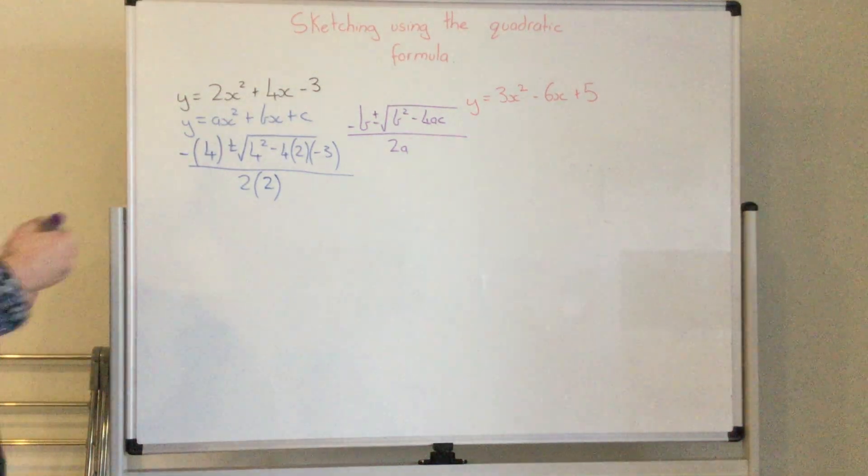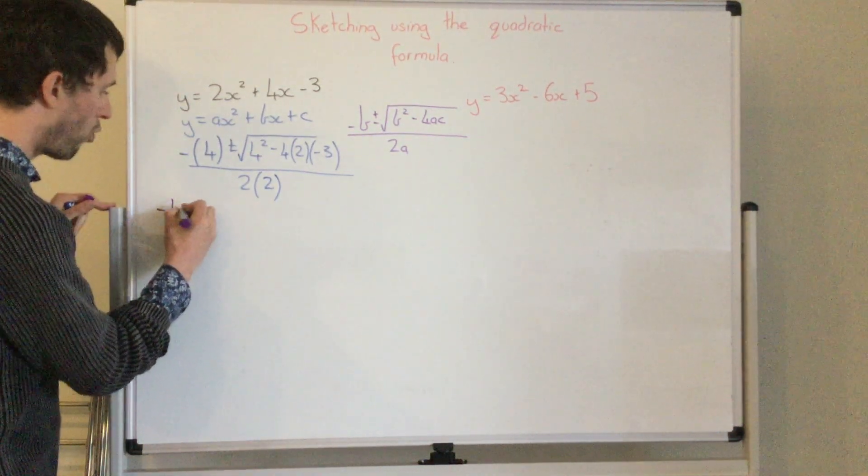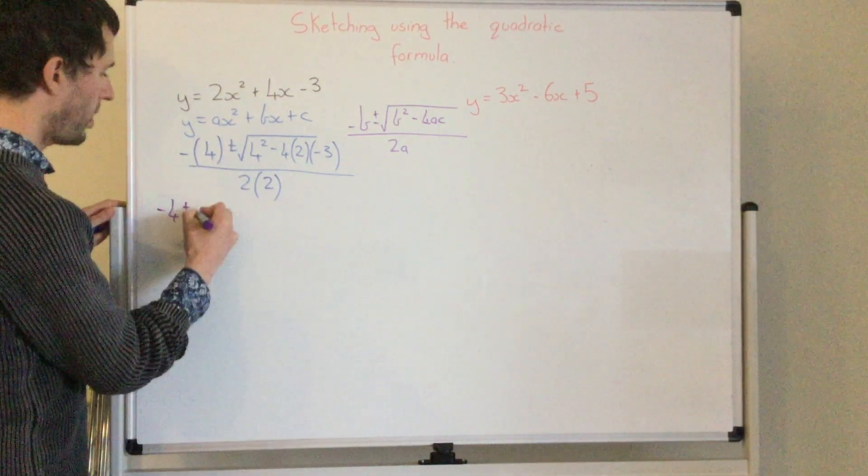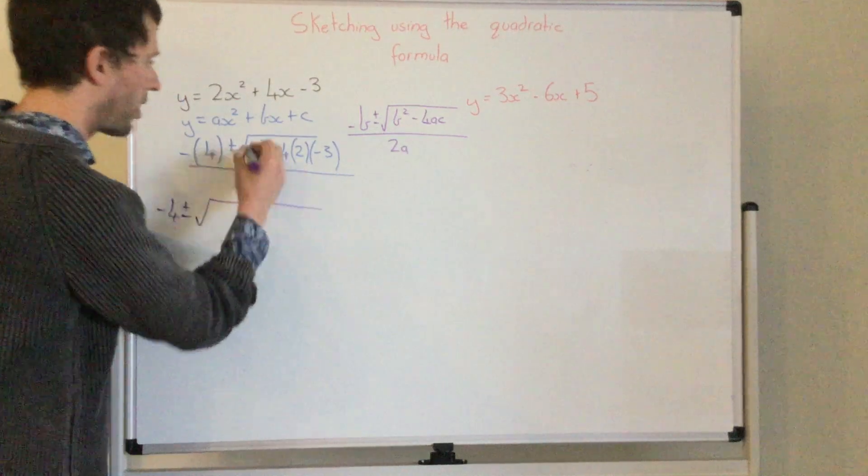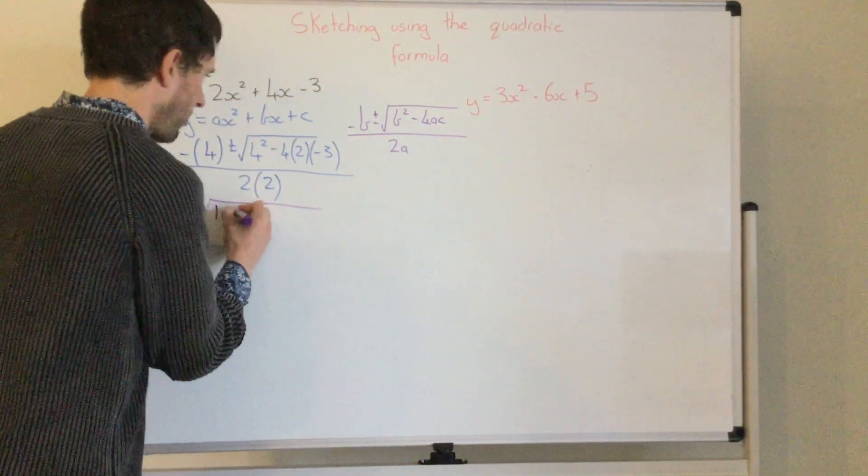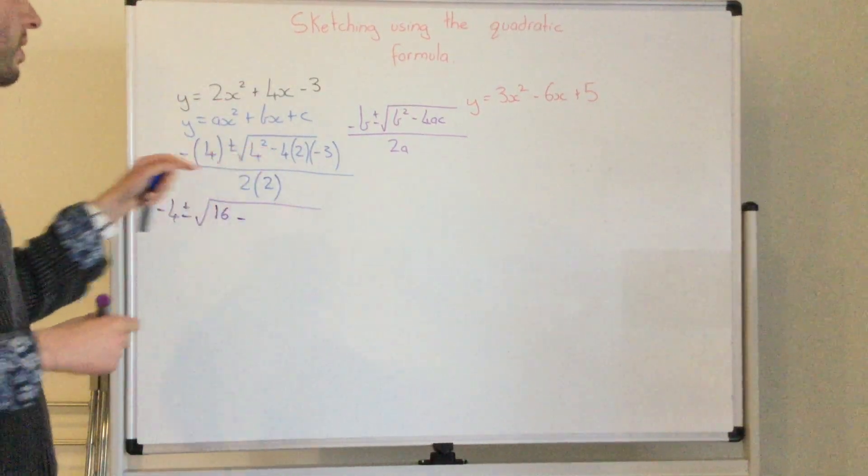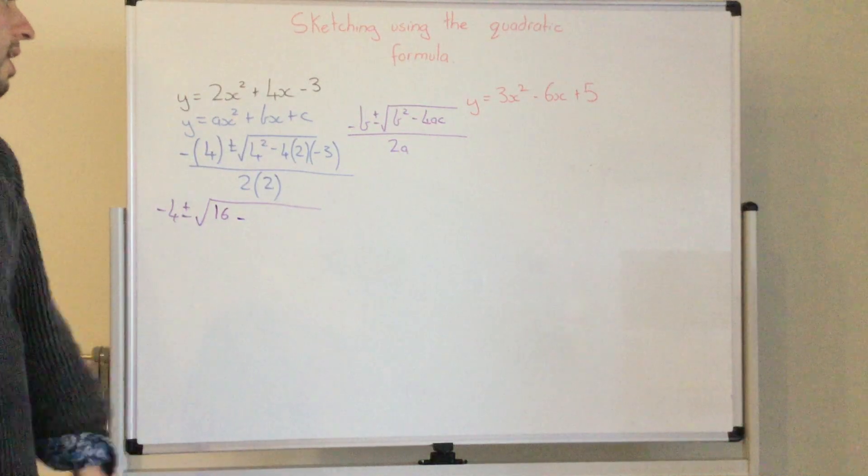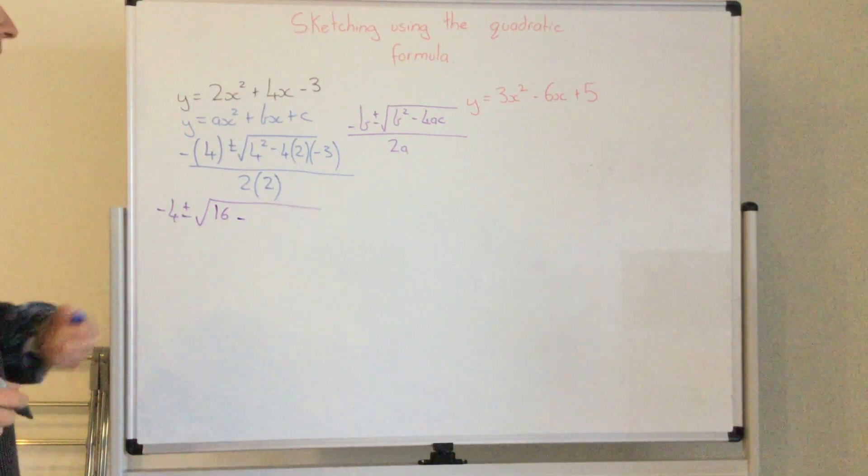Now I'm going to simplify. Negative 4 plus or minus the square root, 4 squared is 4 times 4 equals 16. Minus, now negative 4 times 2 is 8. So it's negative 8.